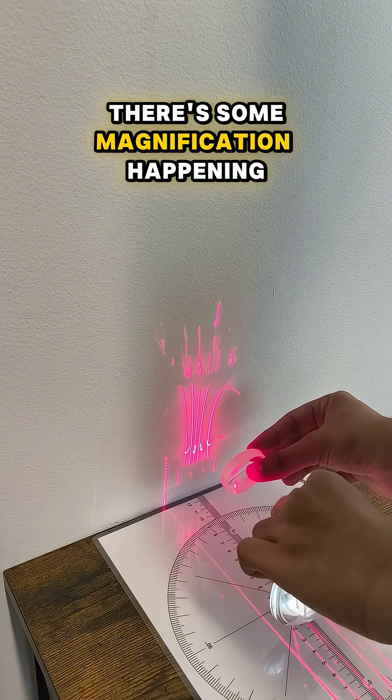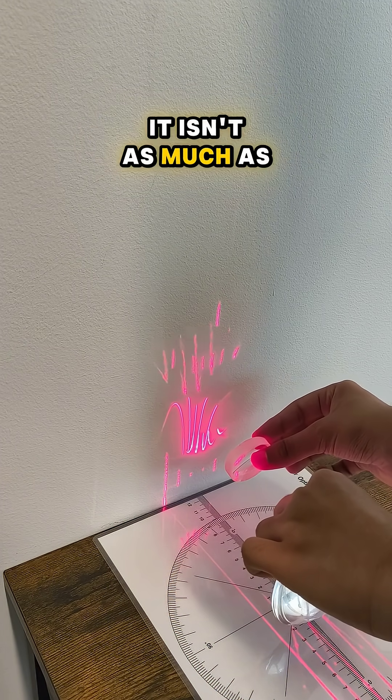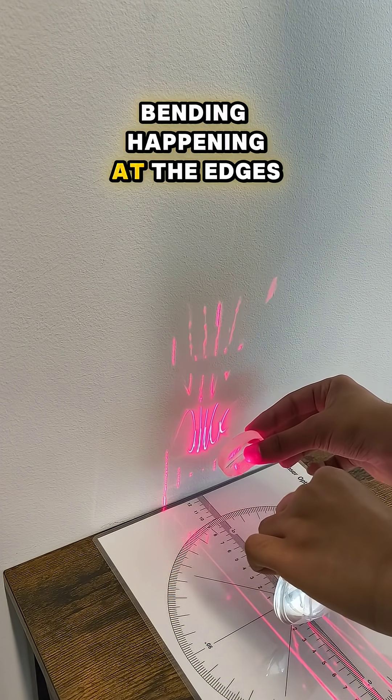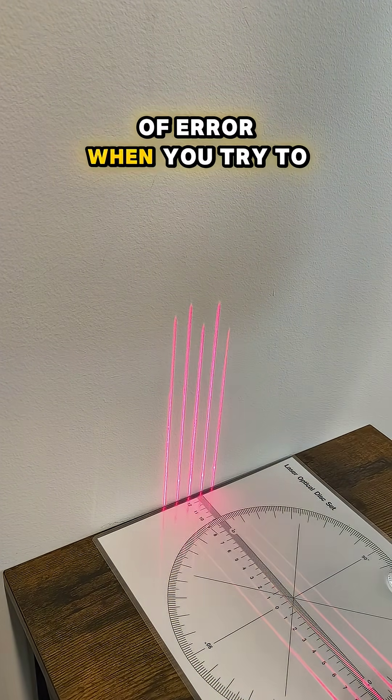As you can see there's some magnification happening. It isn't as much as you'd want it to be, and there's a lot of bending happening at the edges which will cause a lot of error when you tend to view something.